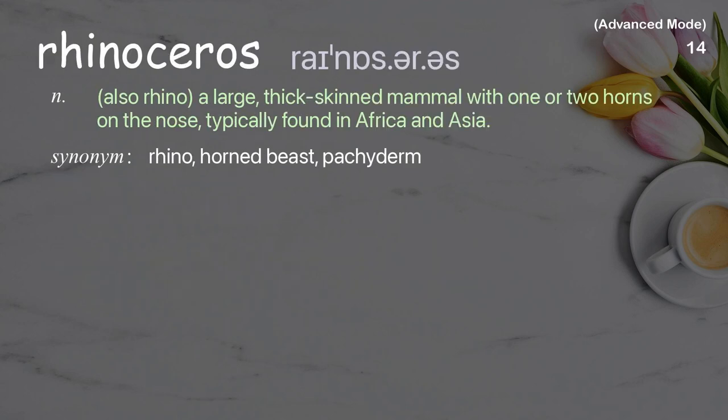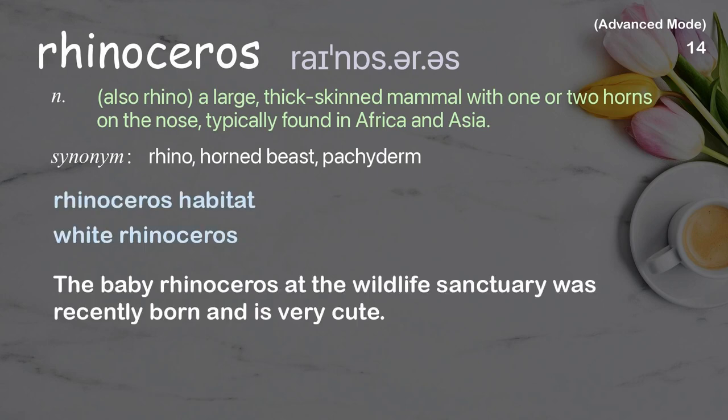Rhinoceros: also rhino; a large, thick-skinned mammal with one or two horns on the nose, typically found in Africa and Asia. Examples: rhinoceros habitat; white rhinoceros. Example sentence: The baby rhinoceros at the wildlife sanctuary was recently born and is very cute.